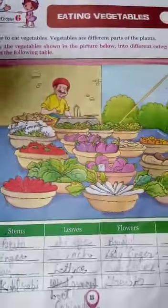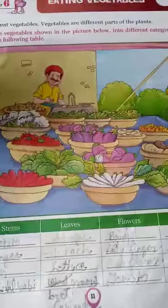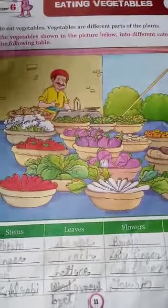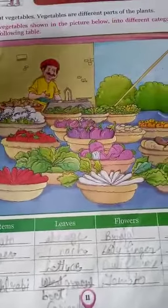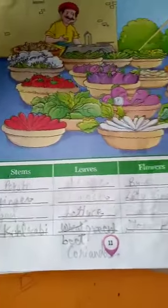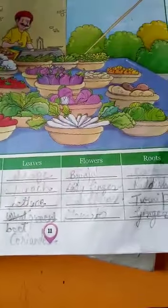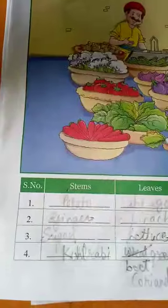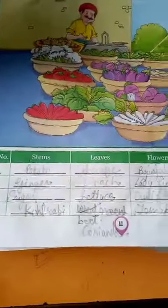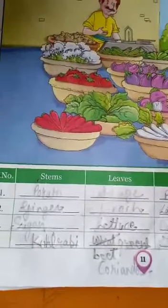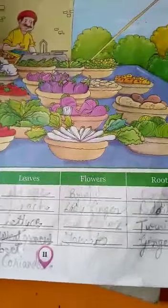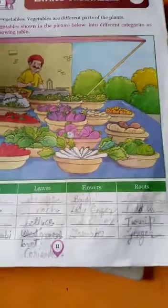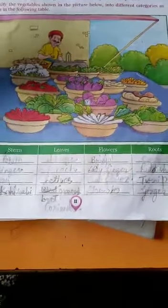In this picture we have shown some vegetables. We will distribute all these vegetables according to the topic. We have four topics: stem, leaves, flowers, and roots. These are the parts of the tree.